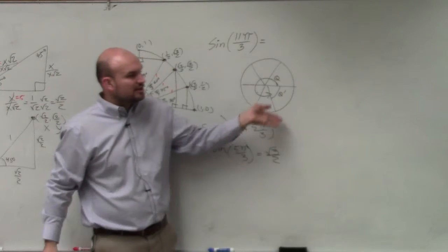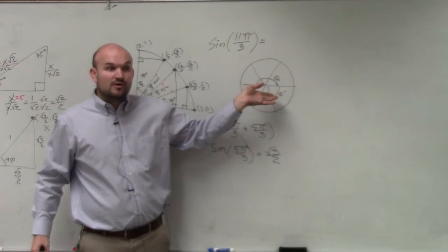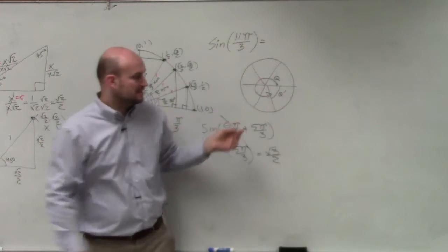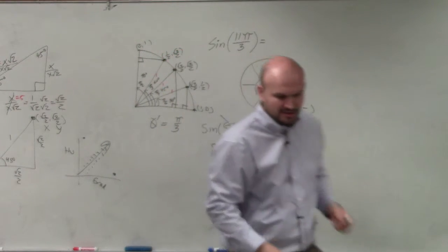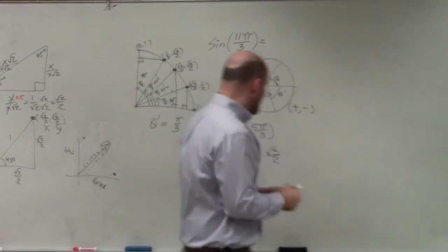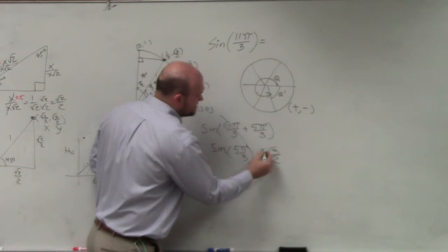where did this angle fall in which quadrant? Fourth. What is negative in the fourth quadrant? The Y coordinate is negative in the fourth quadrant. So therefore, I need to go back to my answer and make sure that this is negative.